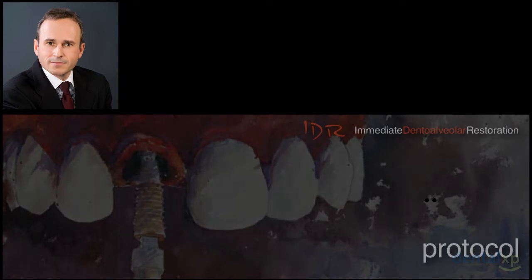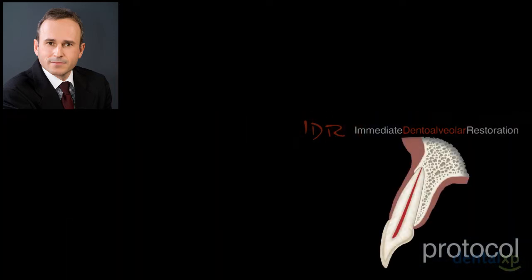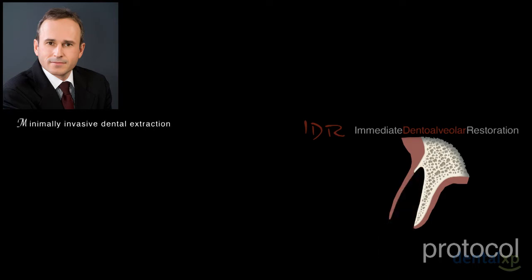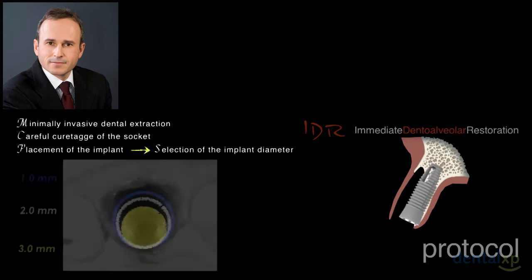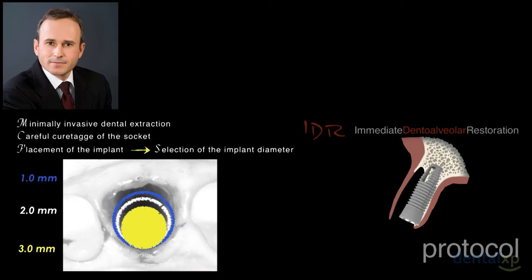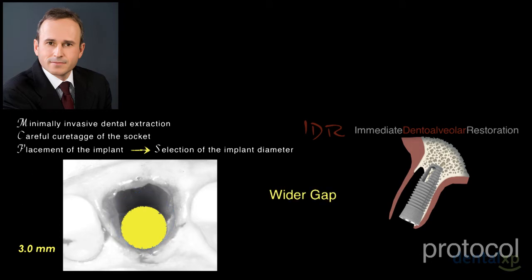Here is the protocol. In a case missing the buccal wall, the first step is minimally invasive dental extraction. The second step is careful curettage of the socket using a serrated curette to remove granulation tissue and remains of periodontal connective tissue. We always look for the best implant position, inserting the implant with palatal wall anchorage. When planning implant diameter selection, we think about the gap — we prefer a gap around three millimeters for all cases, upper and lower, anterior or posterior maxilla.